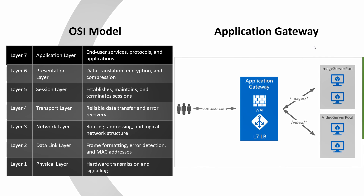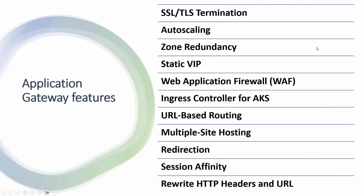Let's move on to the features of Application Gateway. The first one is SSL/TLS termination. It allows Application Gateway to decrypt HTTPS traffic before it passes to the backend server, offloading CPU-intensive decryption from backend servers which improves their performance. Another benefit is centralized certificate management — you don't need to manage certificates on the backend servers, just manage them on the Application Gateway.